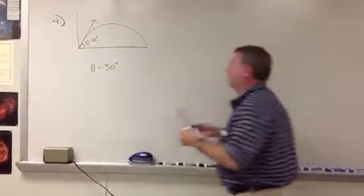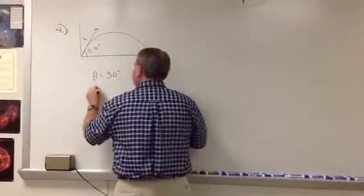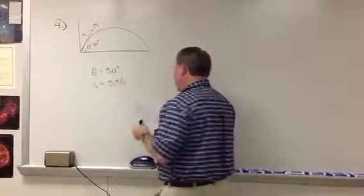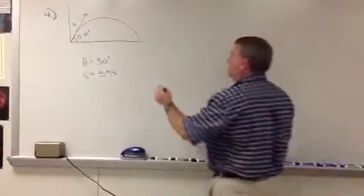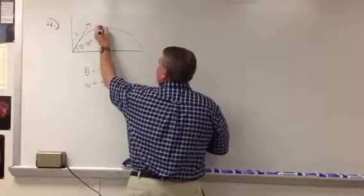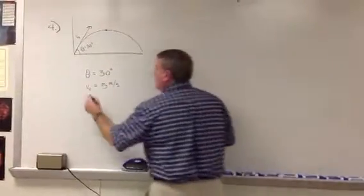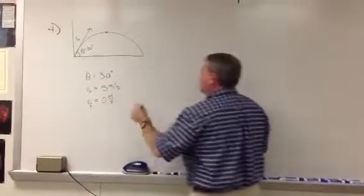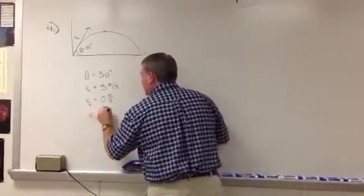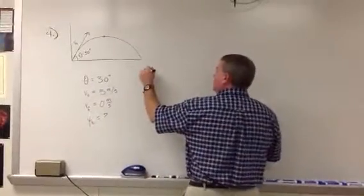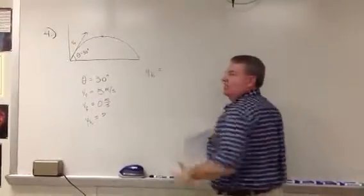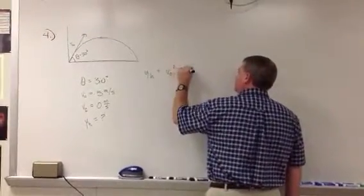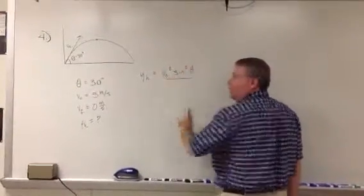With an initial velocity of 5 meters per second, I'll put v0 here. But I'm going to write v0 is equal to 5 meters per second. How long will it take to reach its maximum height? So maximum height is that point there. And what is the final velocity at maximum height? Zero. So zero meters per second. Now we're looking for yh. What is the maximum height?